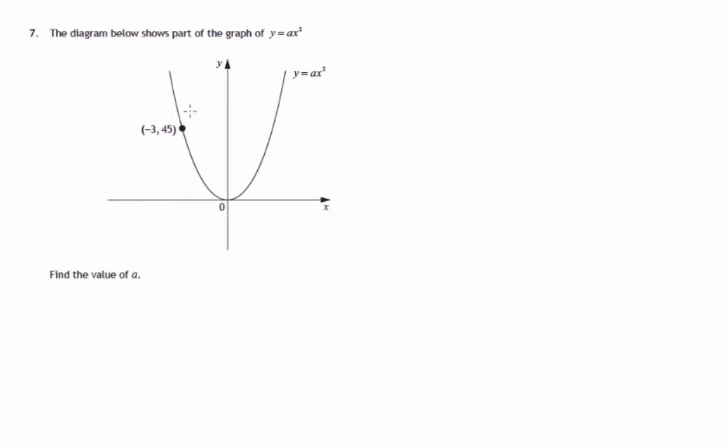So what we'll do is we look at the point, negative 3, 45, which we know lies on the graph. That's the crucial fact here, that negative 3, 45 lies on the graph.